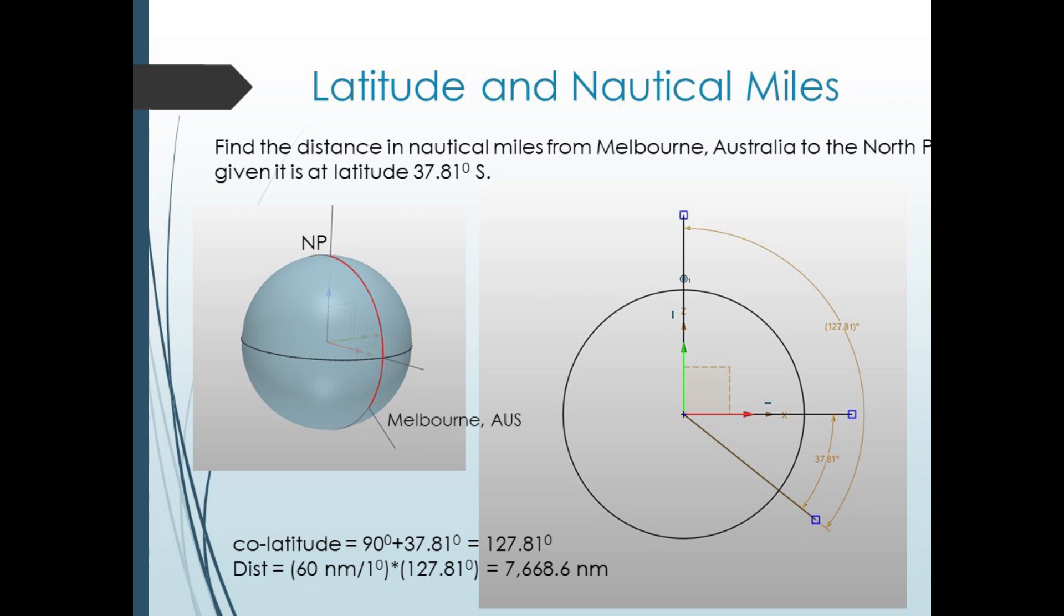On the other hand, or other hemisphere, if we wanted to find the distance from Melbourne, Australia at latitude 37.81 degrees south going to the North Pole, we would now have a co-latitude of 90 plus 37.81 equals 127.81 degrees of arc. So a distance of 127.81 times 60 equals 7,668.6 nautical miles.